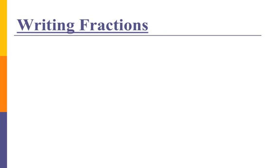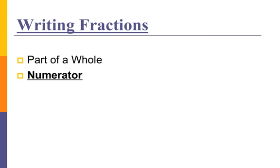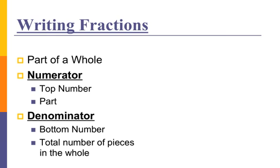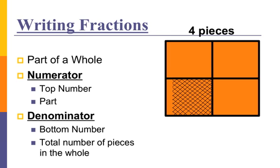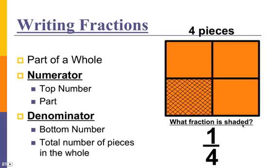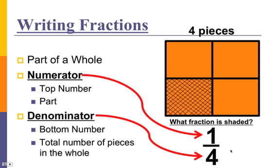So how do I write fractions? Fractions are part of a whole, so I have to write the part and I have to write the whole. The numerator is the top number and that is the part. The denominator is the bottom number and it's the total number of pieces in the whole. So let's say we have this rectangle here representing one whole. I can break that up into four pieces and shade one. Well, what fraction is shaded? There are four total pieces and one that's shaded, so that would be one fourth. The one is the numerator and the four is the denominator.